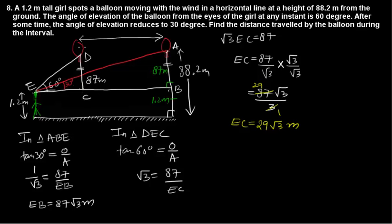Now we find the distance BC. The distance BC equals EB minus EC.